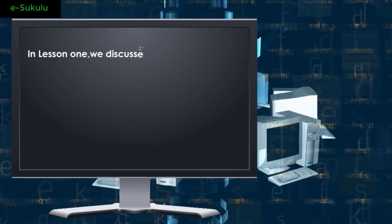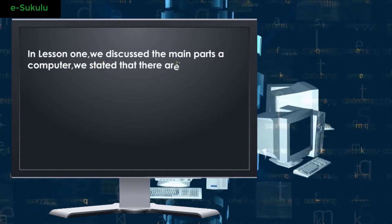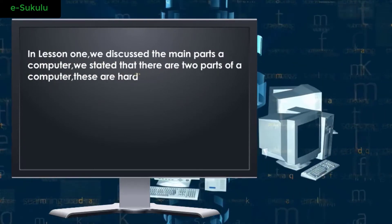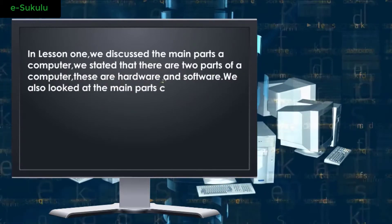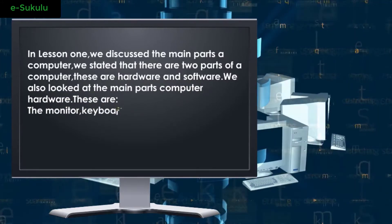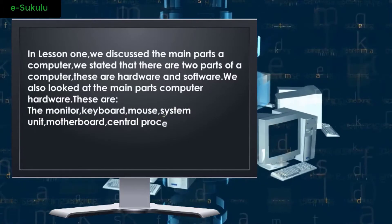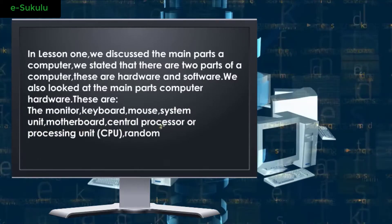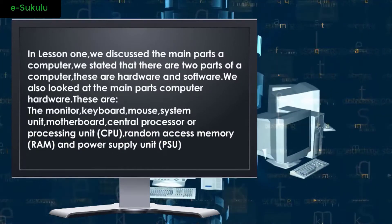In Lesson 1, we discussed the main parts of a computer. We stated that there are two parts of a computer: hardware and software. We also looked at the main parts of computer hardware — these are the monitor, keyboard, mouse, system unit, motherboard, central processing unit (CPU), random access memory (RAM), and the power supply unit (PSU).